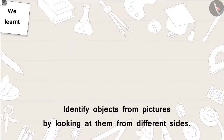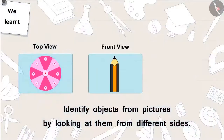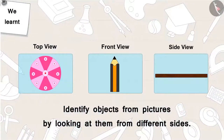In this video, with the help of some interesting examples, we learnt to identify objects from pictures by looking at them from different sides. In the next video, we will see some misconceptions about looking at objects from different sides.